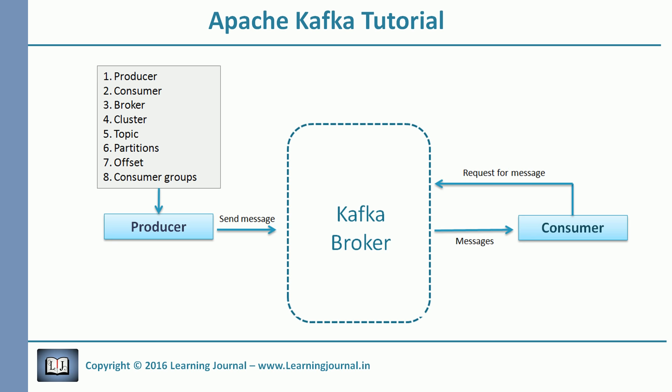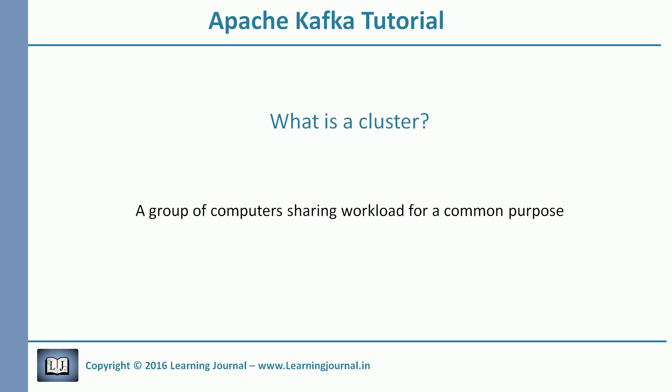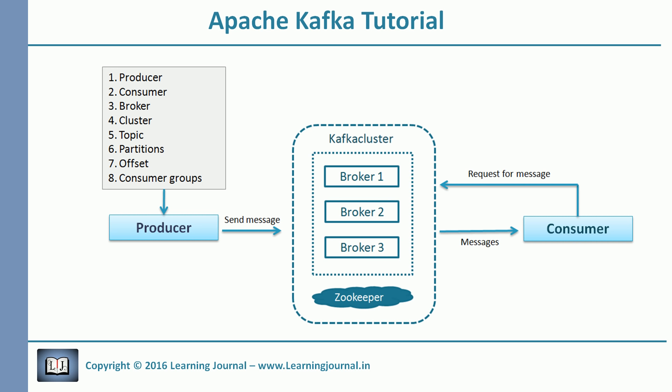The next term is the cluster. If you have any background in distributed systems, you already know that a cluster is a group of computers acting together for a common purpose. Since Kafka is a distributed system, the cluster has the same meaning for Kafka — it is simply a group of computers, each executing one instance of a Kafka broker.